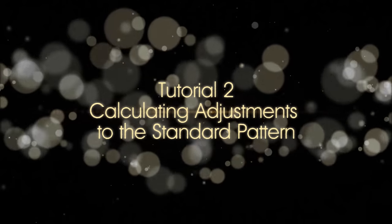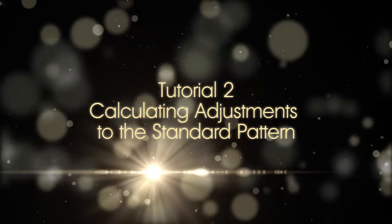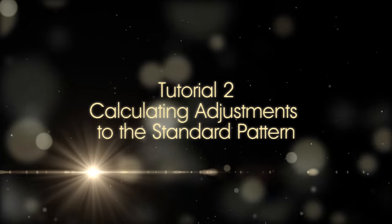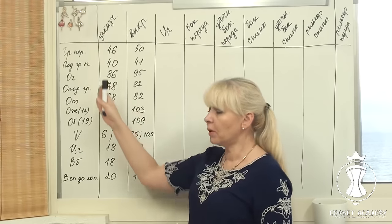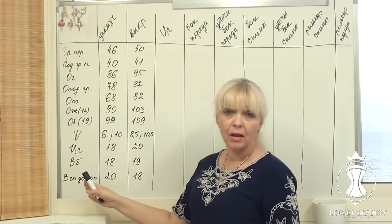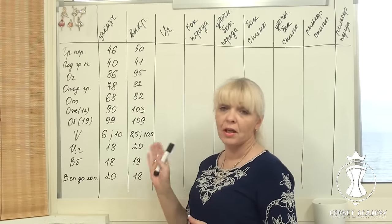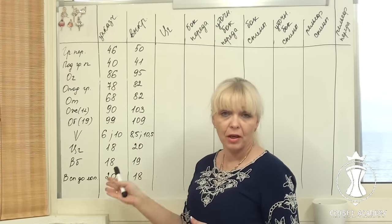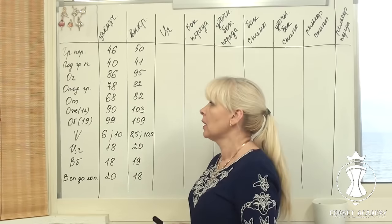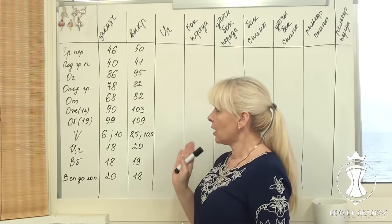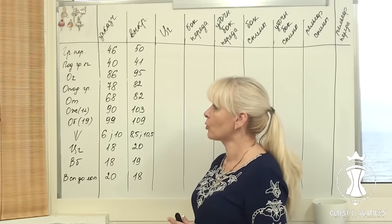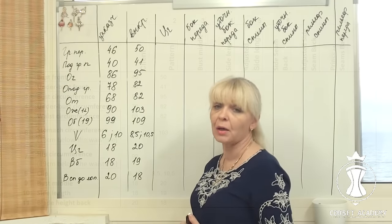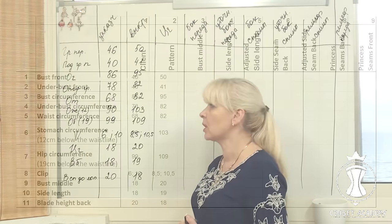Tutorial 2: Calculating adjustments to the standard pattern. I need to customize the standard pattern after my client's measurements. I draw a table on the writing board. There are nine columns and the number of lines corresponds with the number of required measurements.